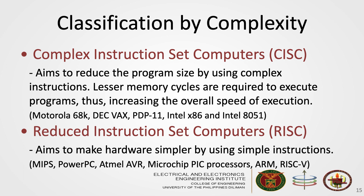Another classification of architectures is based on complexity. The two popular architectures are CISC and RISC. The Complex Instruction Set Computer, or CISC, aims to make program size smaller using complex instruction sets, increasing overall execution speed by requiring fewer memory cycles. Processors using CISC include Motorola 68K, DEC VAX, PDP-11, and Intel's x86 and 8051. On the other hand, the Reduced Instruction Set Computer, or RISC, uses simpler instructions to make hardware design simpler. MIPS, PowerPC, Atmel AVR, Microchip PIC, ARM, and RISC-V all use RISC architectures.